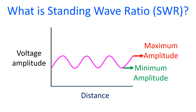Standing wave occurs when there is an impedance mismatch between the transmission line and the load, which is the antenna. When there is an impedance mismatch, part of the signal is reflected back to the transmitter. This reduces the effective power transmitted and thereby the efficiency.